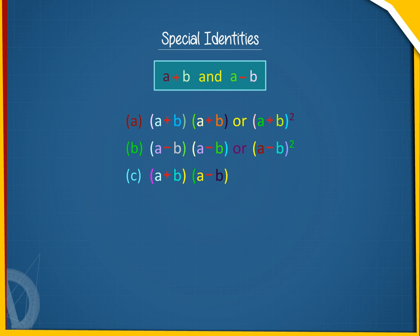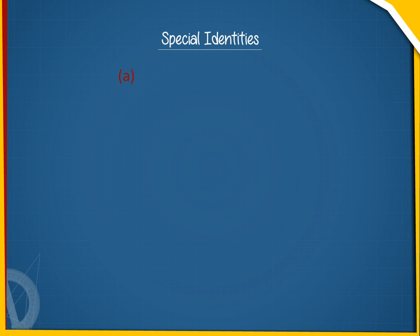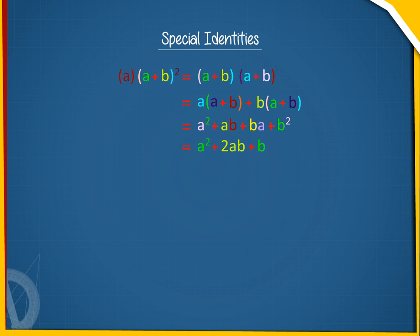On expanding these products, we find: (A+B)² equals (A+B) into (A+B) equals A into (A+B) plus B into (A+B) equals A² plus AB plus BA plus B² equals A² plus 2AB plus B². Since AB equals BA, thus (A+B)² equals A² + 2AB + B².